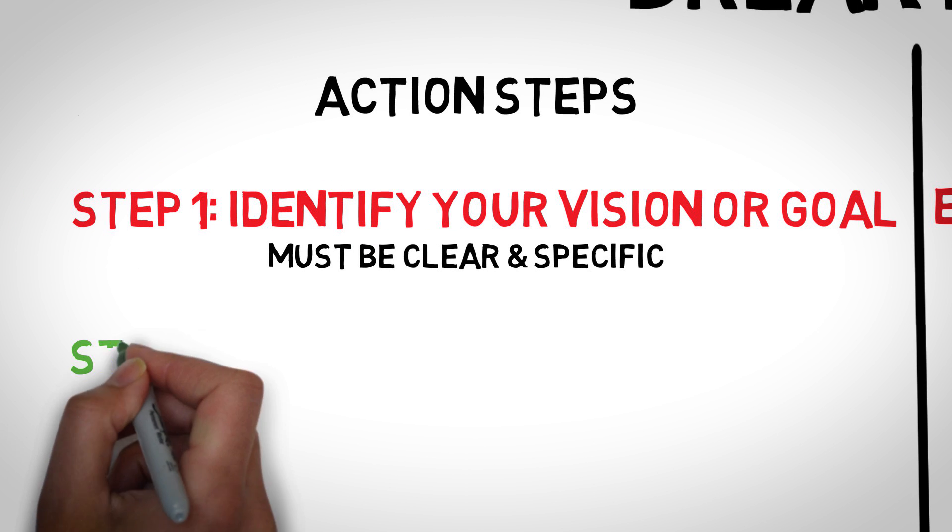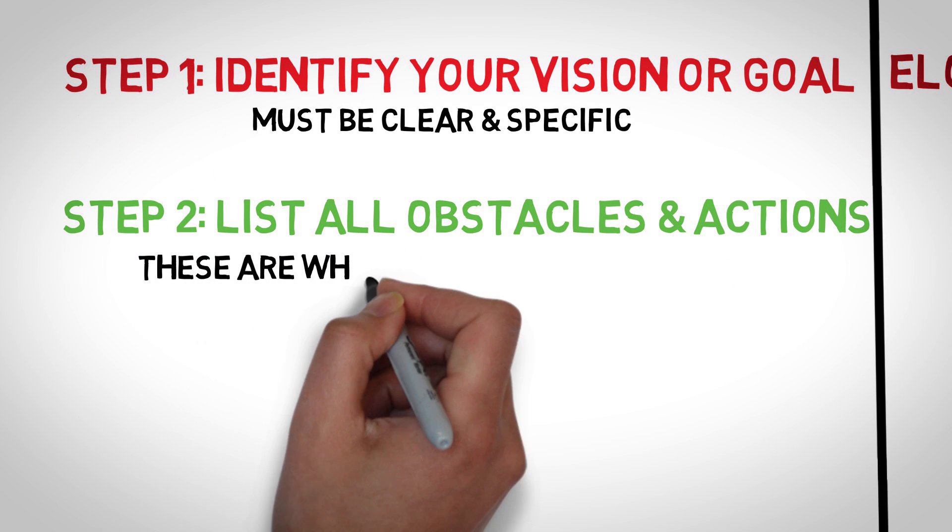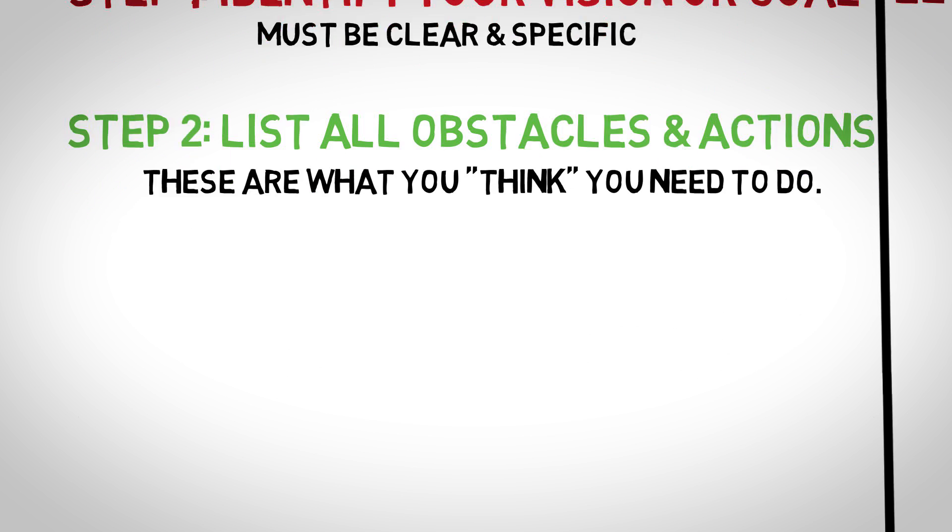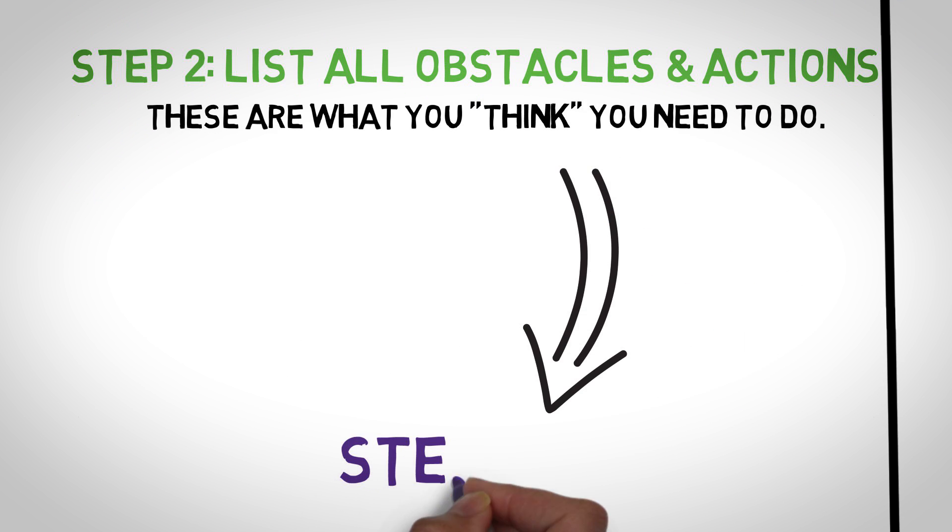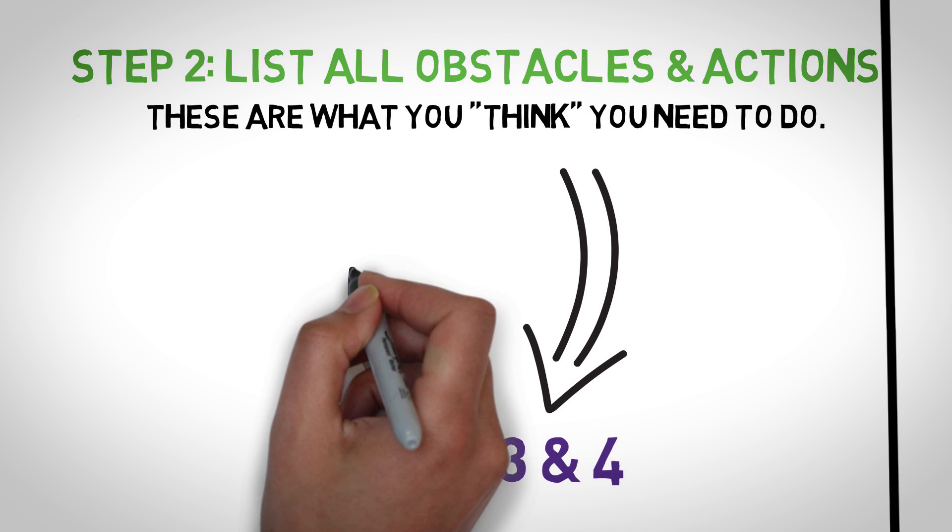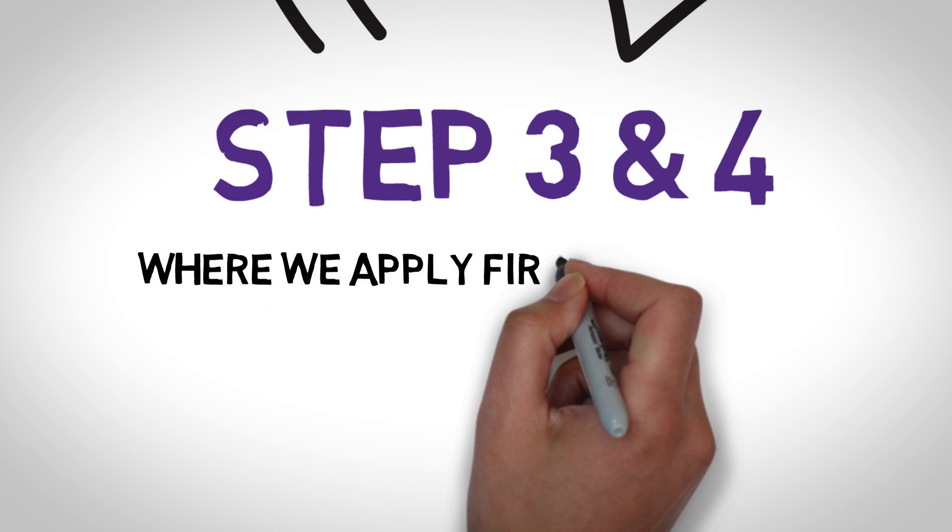Step 2. With the goal comes different types of obstacles. List out all the obstacles and actions you think you need to do to get past them. Perform steps 3 and 4 for each of them. Most people stop at step 2 and then immediately take actions on the assumptions. Step 3 is where you really apply first principles.